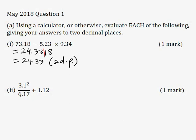Part 2: 3.1 squared divided by 6.17 plus 1.124, one mark. I'll type this expression into my calculator and press equal. I'm getting a value of 2.677536467.